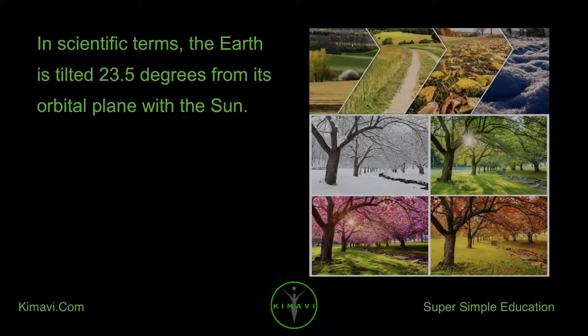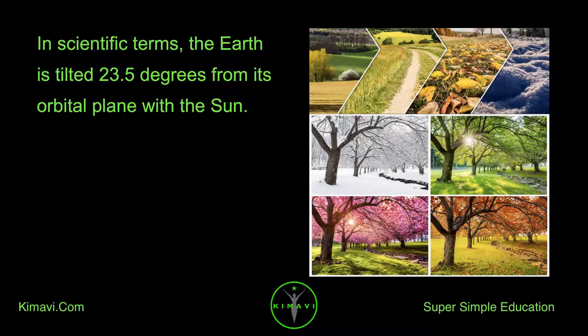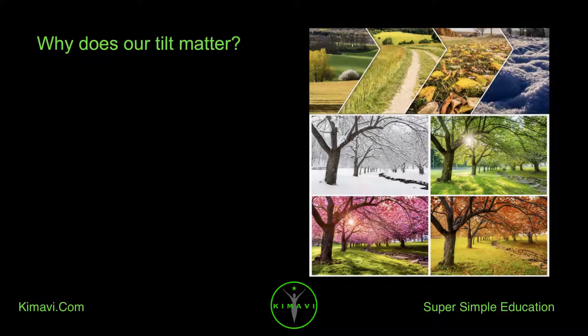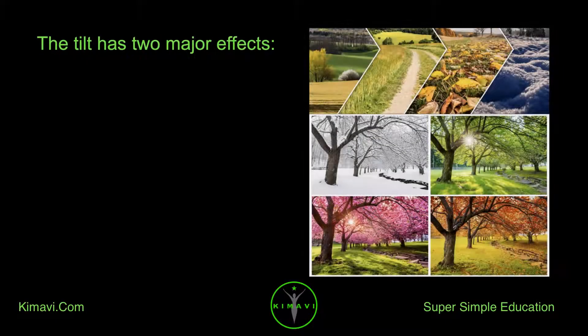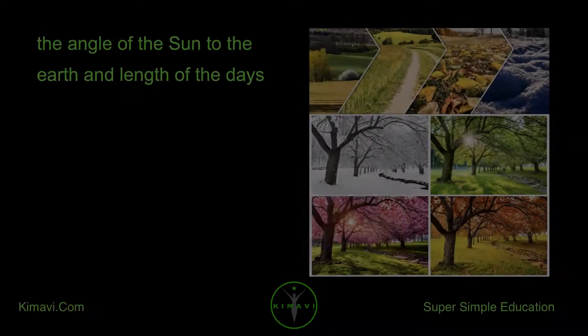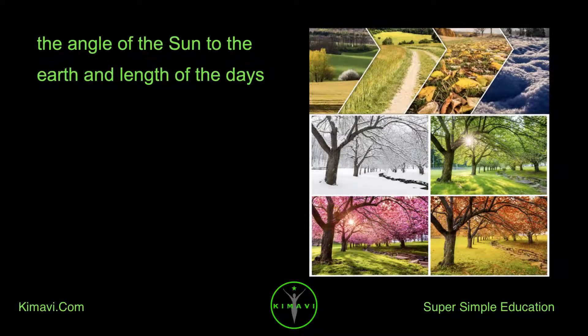In scientific terms, the Earth is tilted 23.5 degrees from its orbital plane with the Sun. Why does our tilt matter? The tilt has two major effects: the angle of the Sun to the Earth and length of the days.